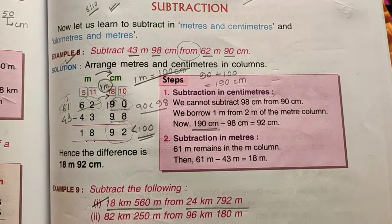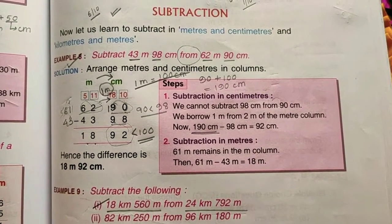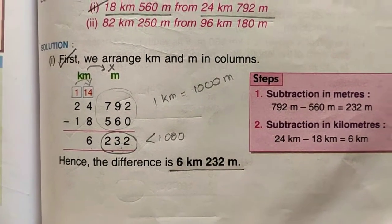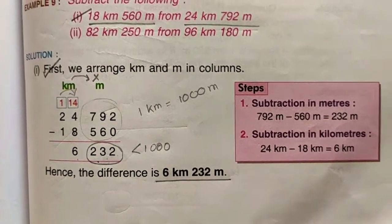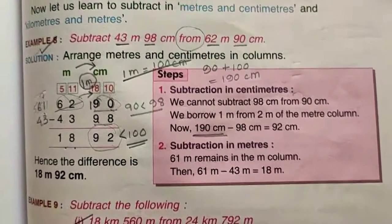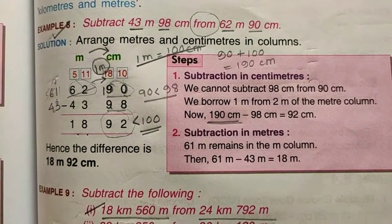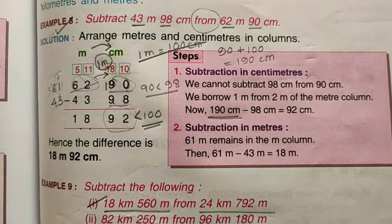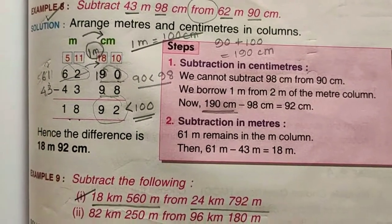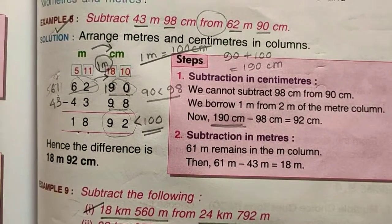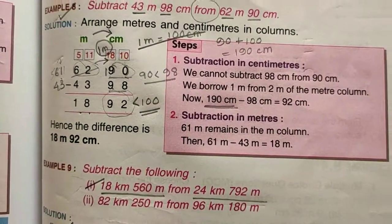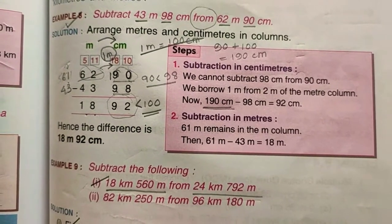So today we have learned about two types of subtraction. First one is without borrowing, meaning from one column to another column without any borrowing. And the second one is with borrowing, that is from the bigger column to smaller column, borrowing some value from bigger column to smaller column. So these two types of subtraction we learned today. Thank you.